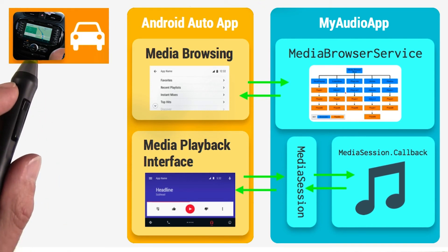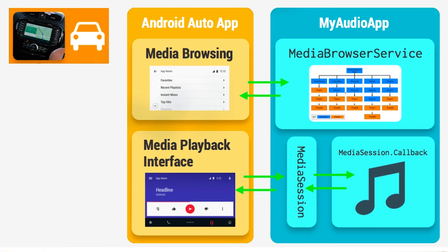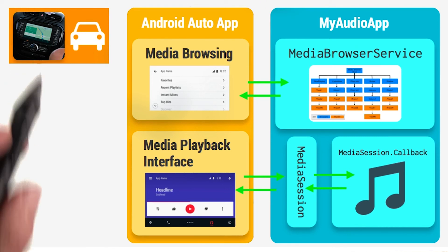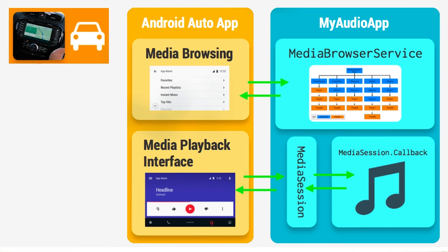The driver of the car then gets to select a song using either the touch screen or using voice search in the car. And then Android Auto will use the media session to run your callbacks. So you never have to worry about all the details of making a user interface that is safe for driving, because Android Auto takes care of all of that for you.